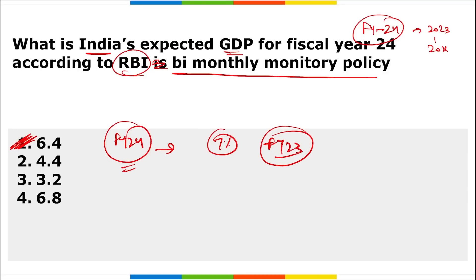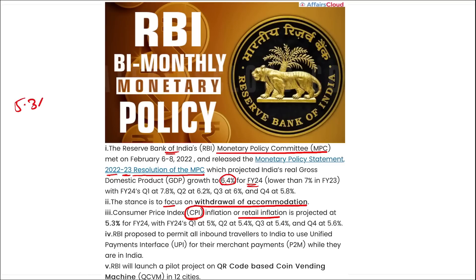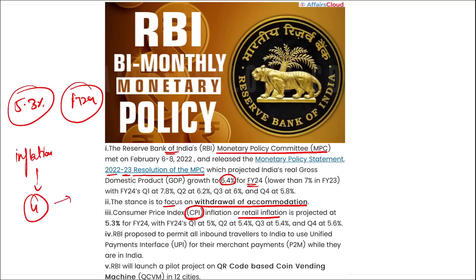This is very important. In the RBI's monetary policy statement 2022–2023, the resolution of the MPC stated that India will grow at a GDP growth rate of 6.4% for fiscal year 24. The stance is to focus on withdrawal of accommodation. CPI inflation, or retail inflation, is projected at 5.3% for fiscal year 24. RBI also aims to reduce inflation to 4% by the year 2024.